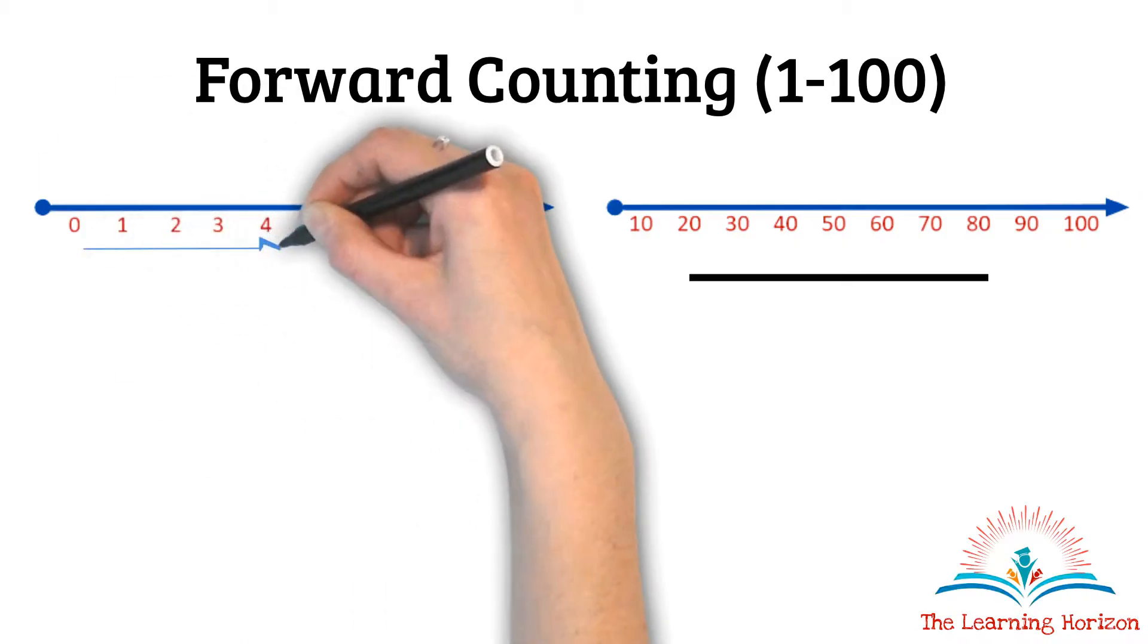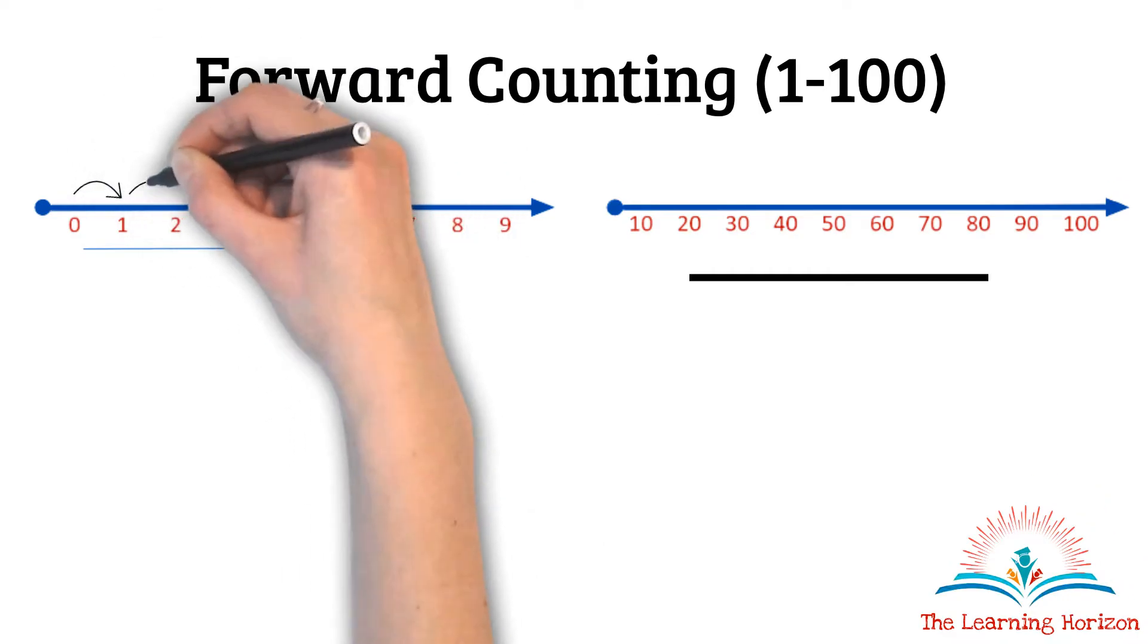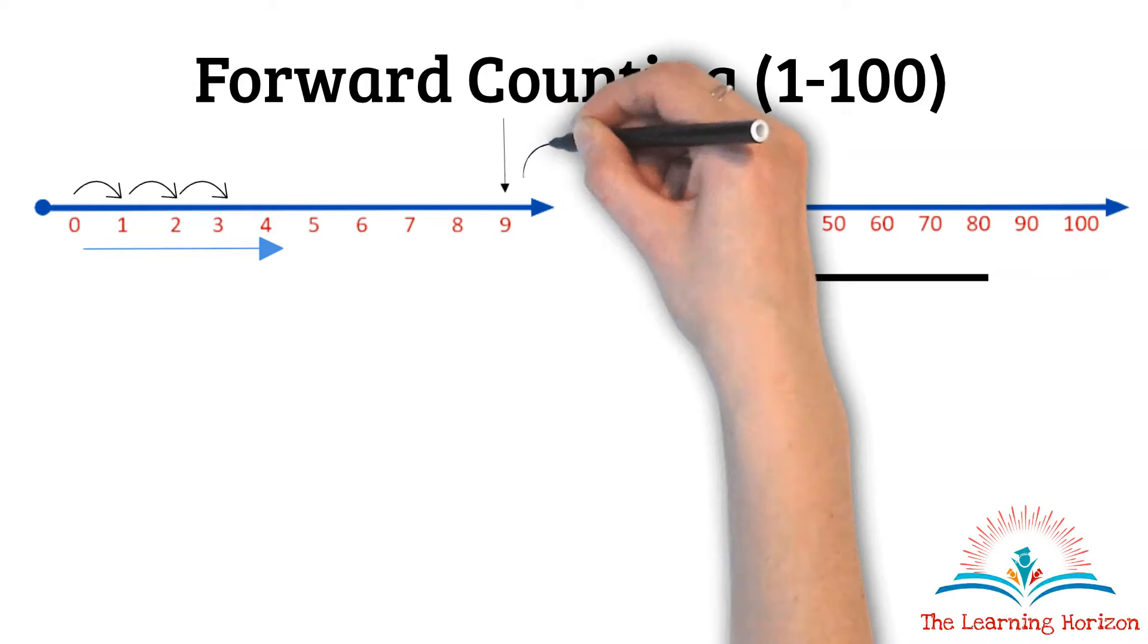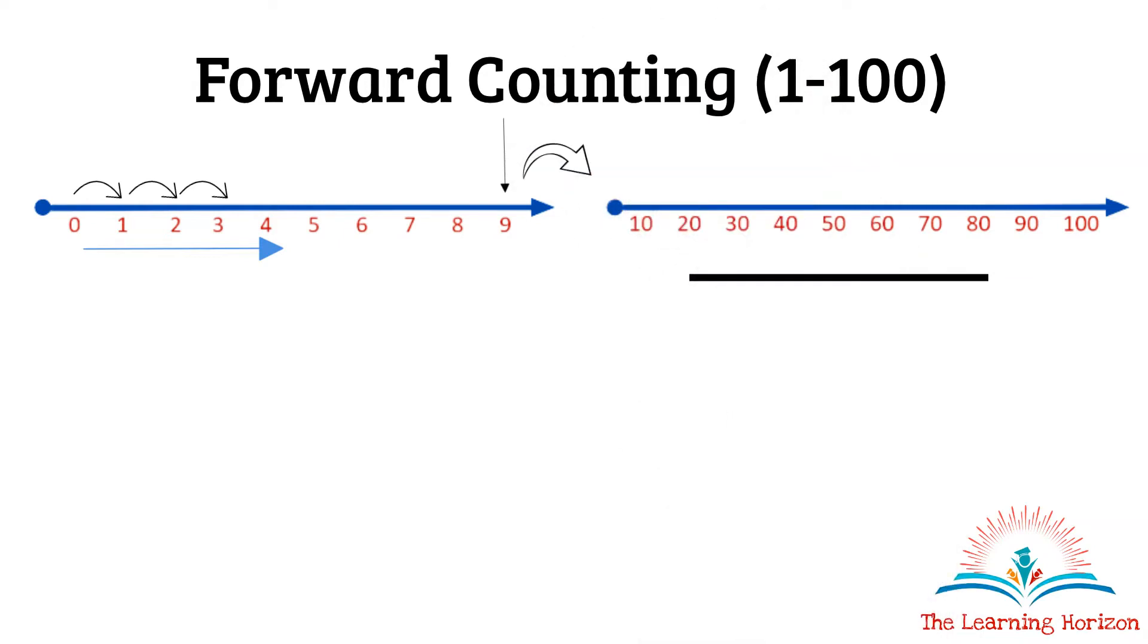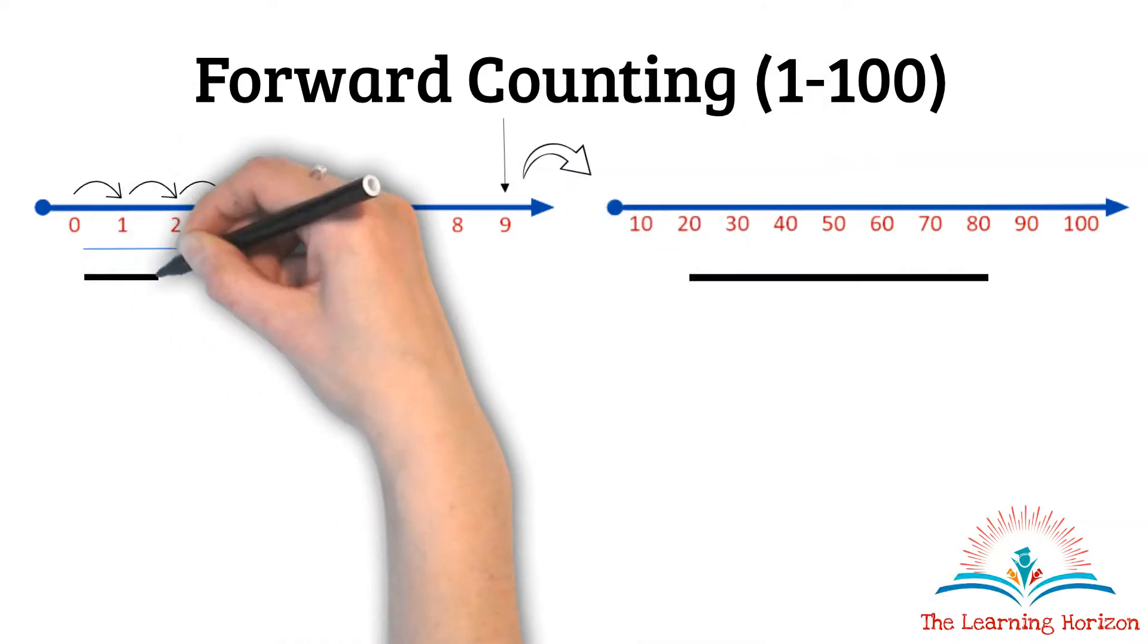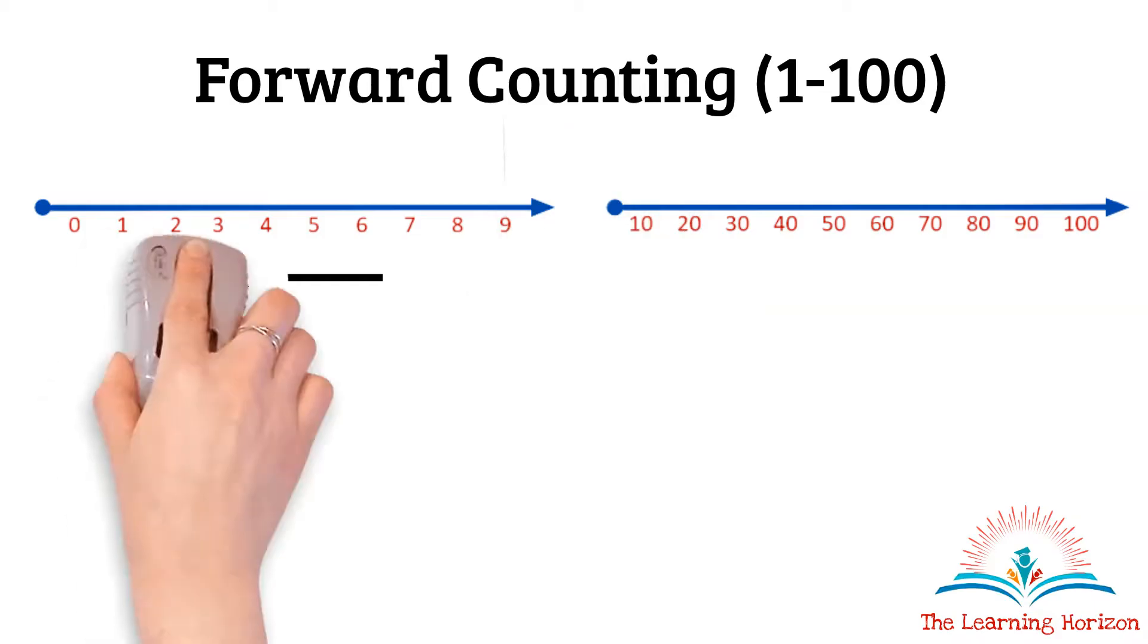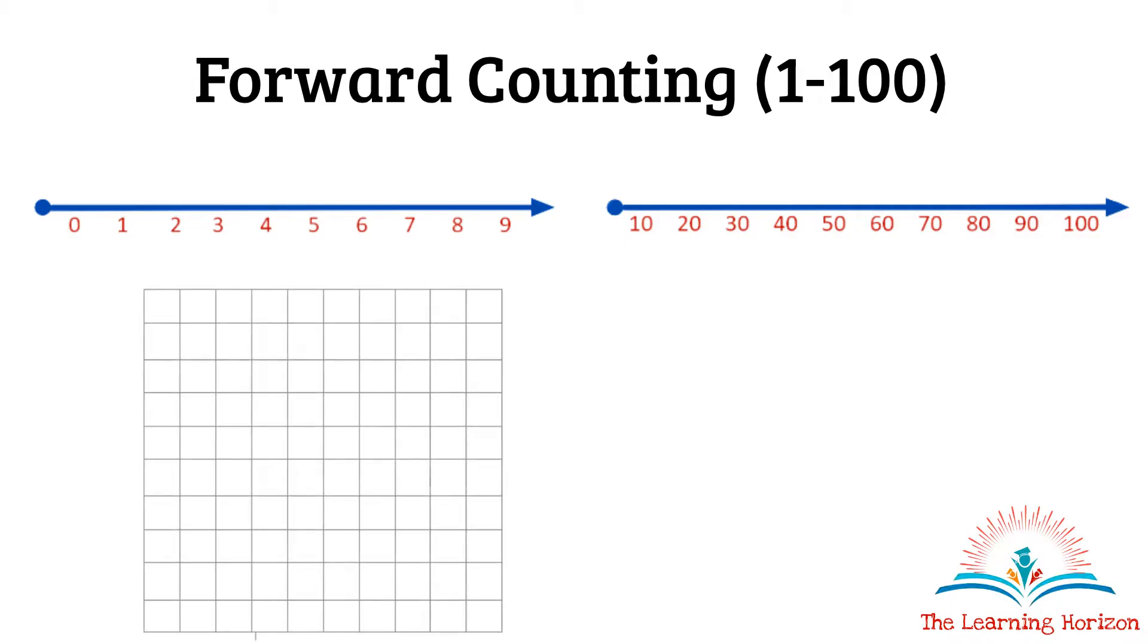When we count forward, we follow the same order of digits and when we reach 9 we move on to the tens and then repeat the same order from 0 to 9 for every tens. Let us take an example and understand and also build a hundreds chart together.